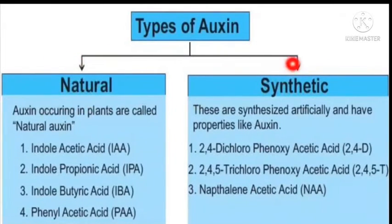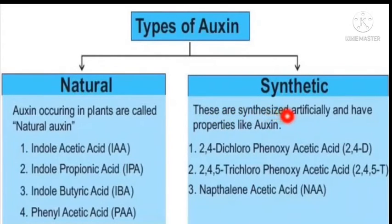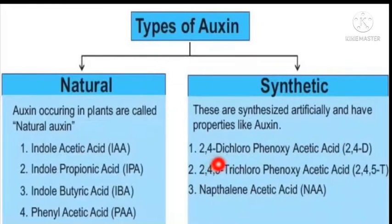There are two types of auxins: natural auxins and synthetic auxins. Natural auxins occur naturally in plants — for example, indole acetic acid, indole propionic acid, indole butyric acid, and phenyl acetic acid. Synthetic auxins are synthesized artificially and have properties similar to auxin — for example, 2,4-dichlorophenoxyacetic acid (2,4-D), 2,4,5-trichlorophenoxyacetic acid (2,4,5-T), and naphthalene acetic acid.